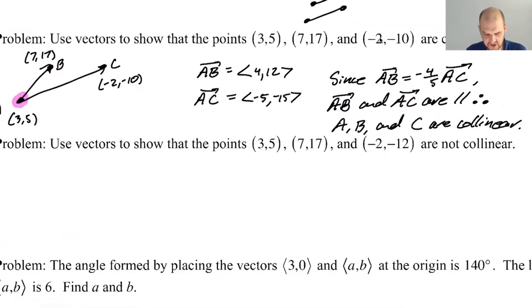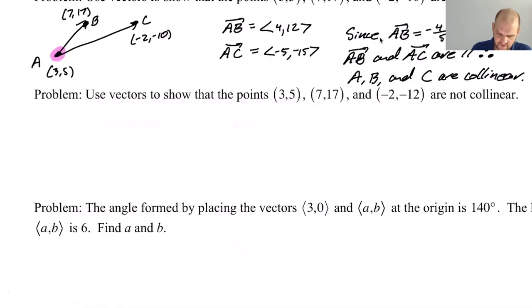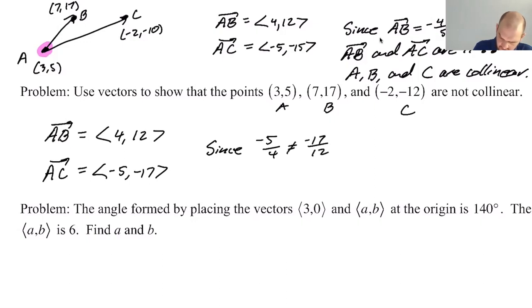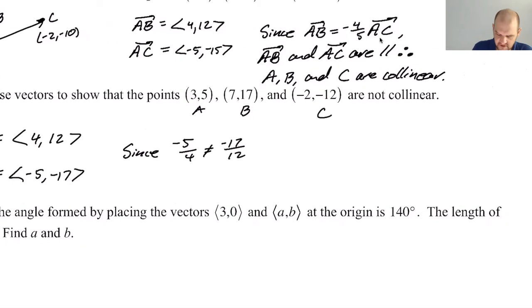So same idea sort of works in reverse, right? So if we do A, B, C, I'm going to find the vector AB. So I pretty much always use the same initial point. So I'm going to find AB and I'll find AC. So AB is 4 and 12. So it's actually the same vector. AC is going to be negative 5 and negative 17. And so since negative 5 over 4 does not equal negative 17 over 12, there doesn't exist a K. There's no K.